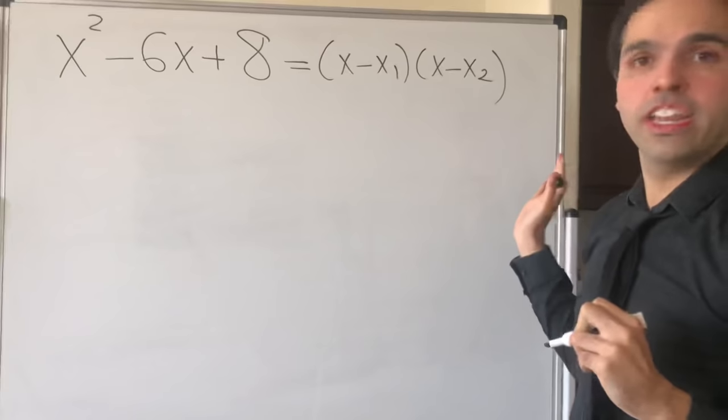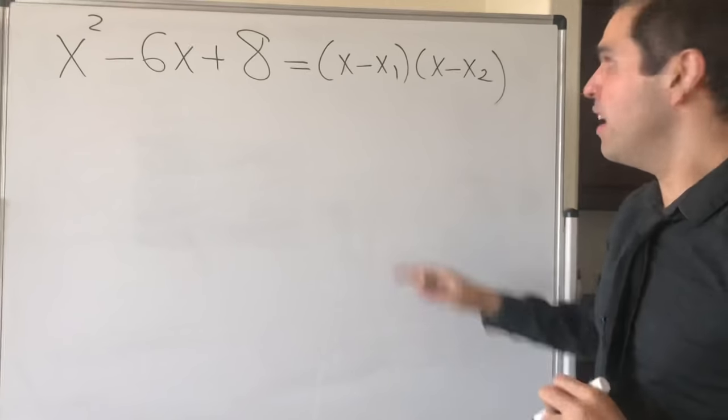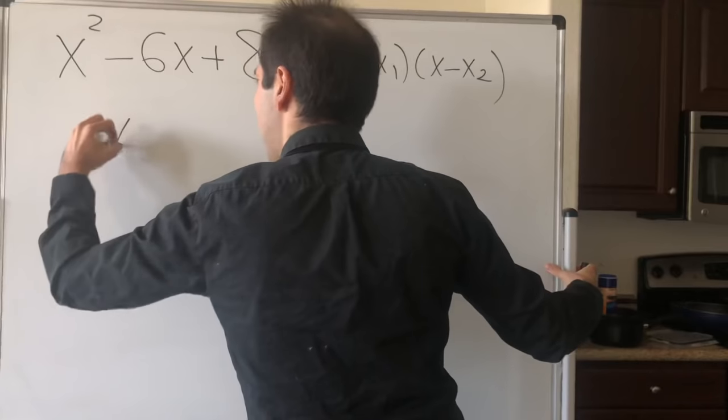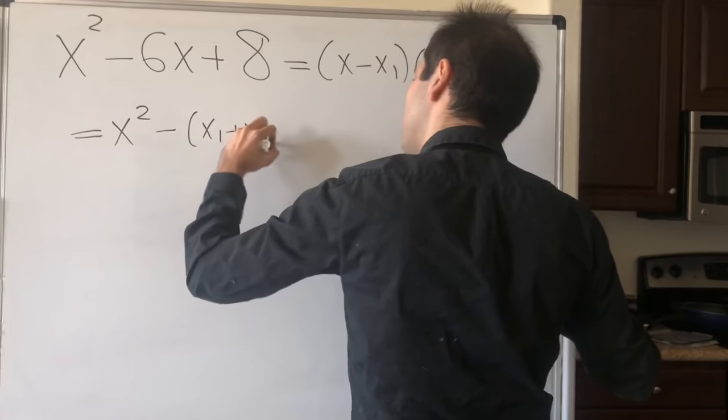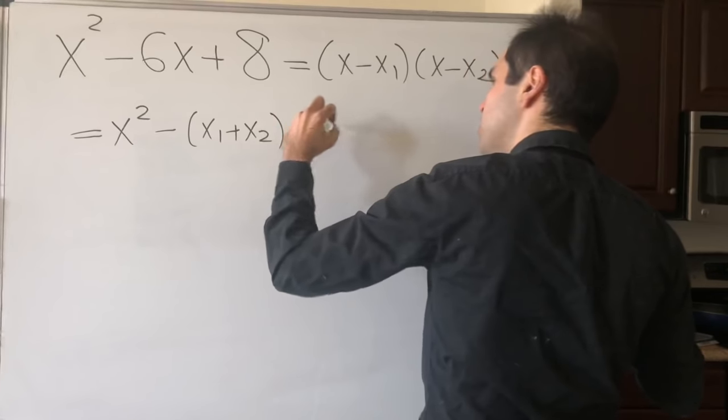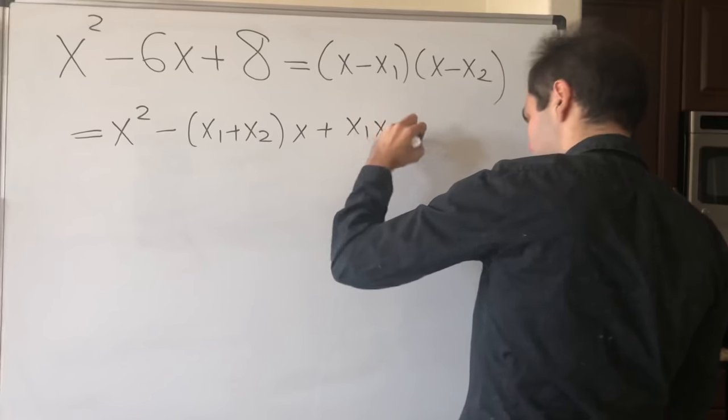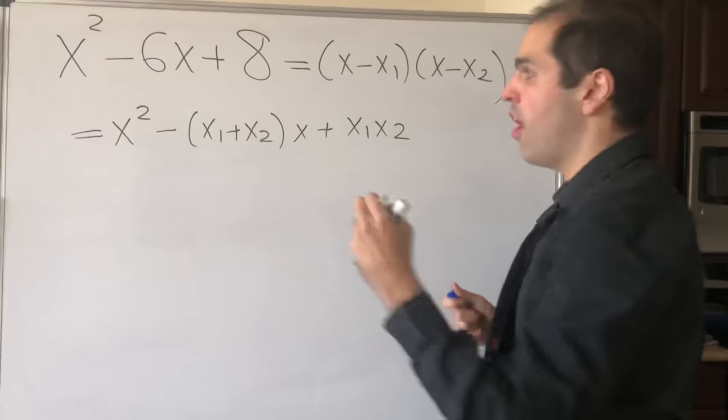Then you get the following. This becomes x² - (x₁ + x₂)x + x₁x₂, which tells you the following thing.